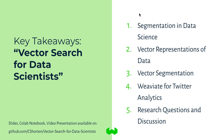With that primer, this presentation is segmented into five key sections. First, segmentation and data science — understanding how we split distributions based on other attributes. Second, vector representations of data — how deep learning models produce vector representations that capture semantics. Third, vector segmentation — using these vector representations to segment our data. Fourth, a case study using Weaviate for Twitter analytics. Fifth, research questions and discussions about continuing this research and expanding vector search applications.